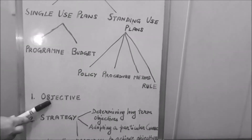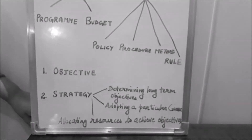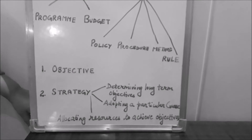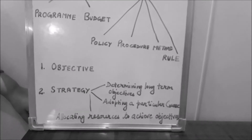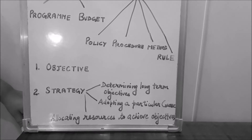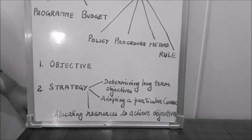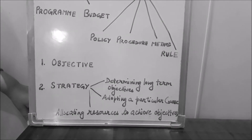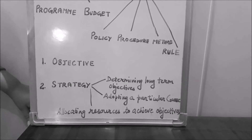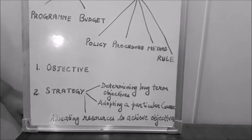We will discuss all these plans one by one. Firstly, objectives. Objectives are the end points for the attainment of which all activities are performed. For example, the objective of a business organization can be to increase profit by 25% or increase sales by 10%. Anything can be set as the objective, and all activities will be performed to achieve it.